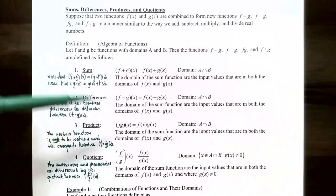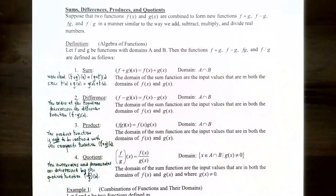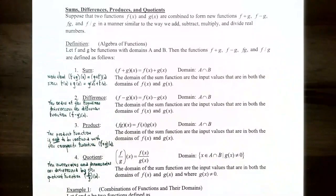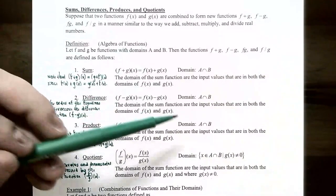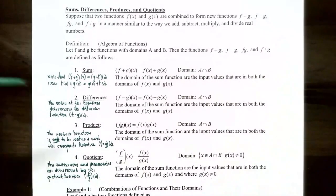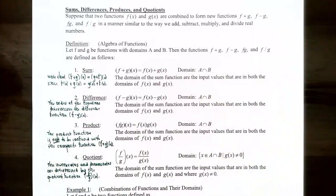The product function is f times g of x, defined as f of x times g of x. Its domain is also A intersect B — the x values in common between the two functions' domains. Note that the product function f times g is not to be confused with the composite function f of g, which we'll talk about in the next video.